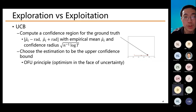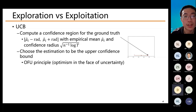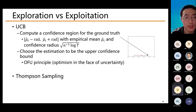This is called Optimism in the Face of Uncertainty, or OFU principle. We know mu_i lies in this region but do not know which part it is, so we assume the best it can do: the largest point in the region, the upper confidence bound, as its estimation. The algorithm then picks the arm with the largest estimated expected reward. This achieves an optimal trade-off between exploration and exploitation. However, this is not the only way — people find that Thompson Sampling also achieves optimal performance in bandit problems.